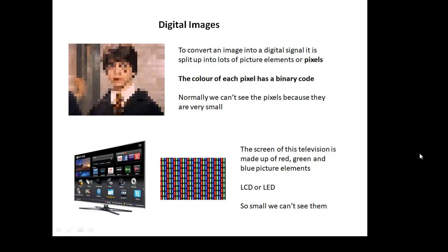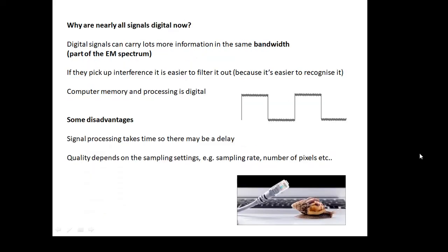The screen of a television is made up of pixels. It's made up of red, green, and blue picture elements. It might be LCD, which is liquid crystals or light emitting diodes. But basically, they're so small that we can't see them. We just see the overall picture. Why are all signals, nearly all signals, digital now? Because there's lots of advantages of digital signals.